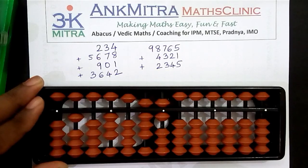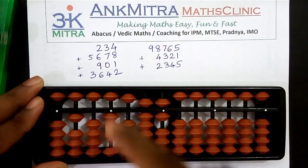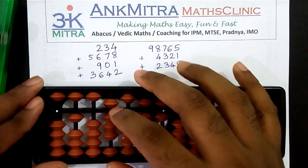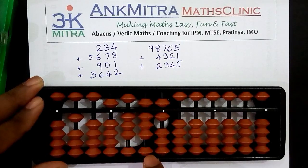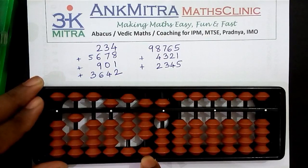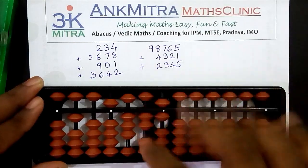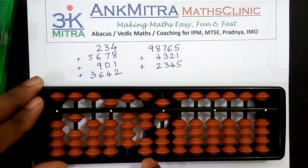Now adding two thousand three hundred and forty-five. Starting with the thousands place — for addition of two I don't have two beads available, but I have five available, so I use the small friend formula: adding five, subtracting three. Two on the thousands place is complete. For addition of three on the hundreds place I have three beads available, done directly. For addition of four on the tens place, I don't have four or five available, so I use the big friend of four — big friend of four is six — subtracting six and adding ten on the next left rod.